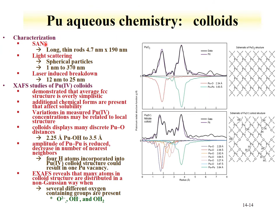Characterization of colloids can be done with a number of different techniques: small angle neutron scattering, light scattering, and laser-induced breakdown spectroscopy. These tend to produce different results for plutonium colloid particle sizes, for two reasons: the methods themselves — for instance, light scattering assumes spherical particles — and the solutions are different in terms of time between when the solution was made and when the measurement was made.